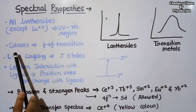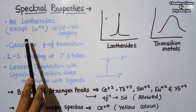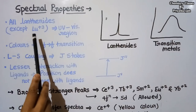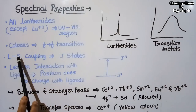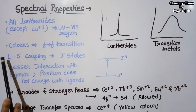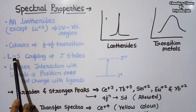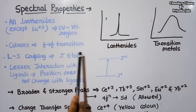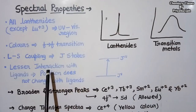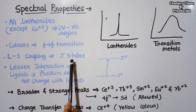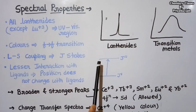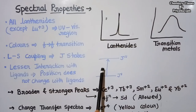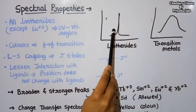In lanthanides, spin-orbit coupling takes place, and we cannot determine magnetic properties using the spin-only formula — we must also consider orbital angular momentum. The spin-orbit interaction gives rise to j states. The gap between adjacent j levels is comparatively large, so the energy required for transitions is high, resulting in sharp peaks in lanthanide spectra, compared to the broad peaks seen in transition metals.